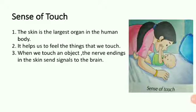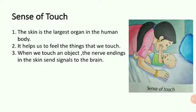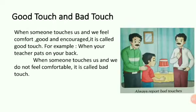Our skin color is decided by a pigment called melanin, which is present in our skin. We should avoid touching things that may harm us — we should not touch hot utensils, and we should be careful when we touch any pointed objects or electronic appliances.